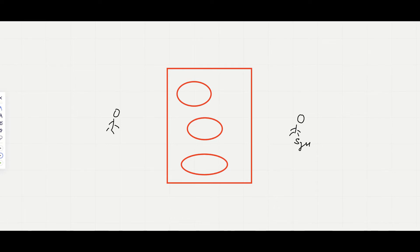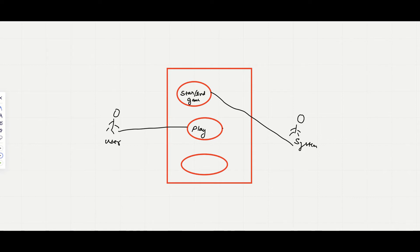The use case diagram gives a top-level overview of the whole system. One use case is starting or ending the game — as discussed in requirements, the system will handle this. Another use case is playing the game: the user throws the dice, and the system responds by changing the user's location, moving them up or down on the board. Logging information is also done by the system. Now let's move on and design the class diagram.